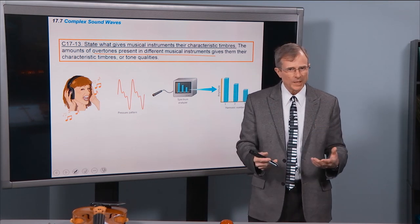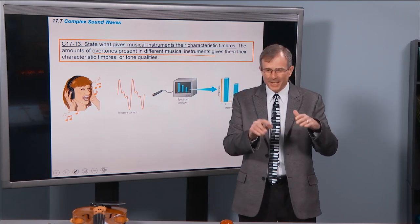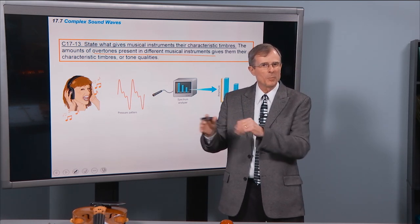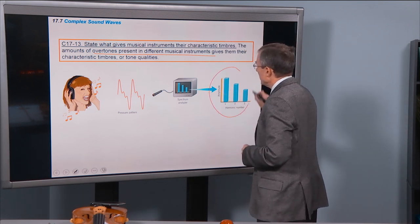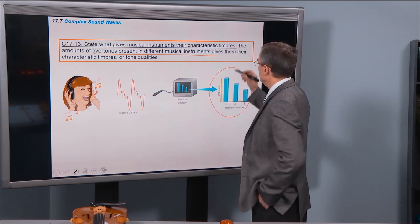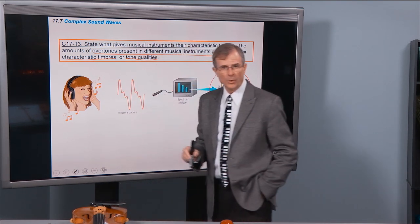The oboe has a very complicated sound, a very nasal sound in some ways. And it's because it has a lot of higher harmonics present in the sound. That's what gives the different instruments their characteristic timbres, or their tone qualities.